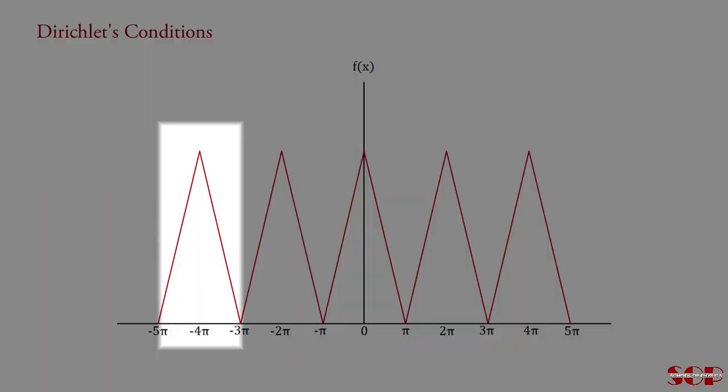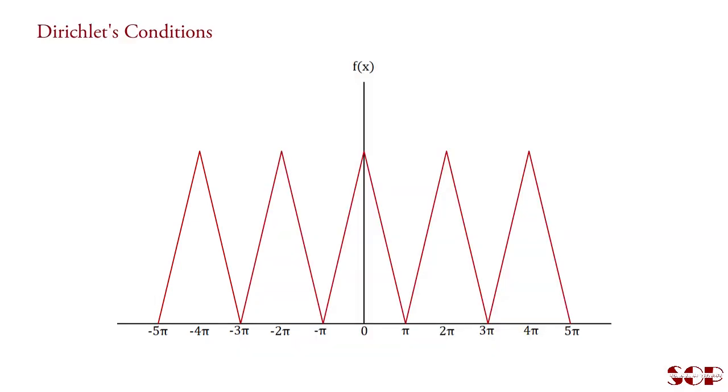And on either side in interval -π to -3π, -3π to -5π and so on. That is, function f(x) = f(x + 2π). It means it is a periodic function.